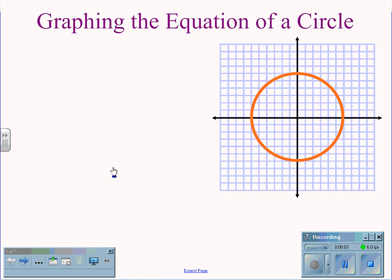Graphing the equation of a circle. The basic equation for a circle is x squared plus y squared equals r squared, where r is the radius of the circle.